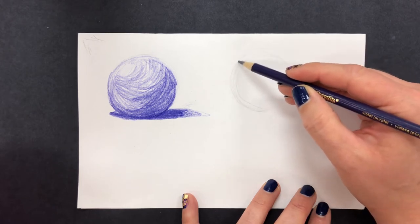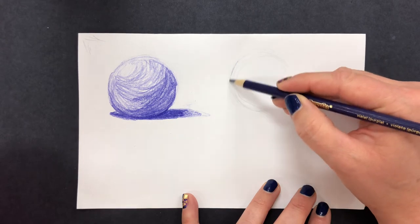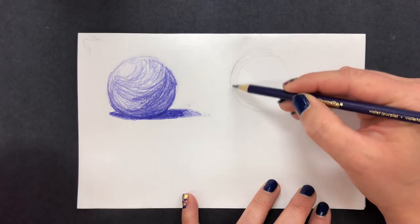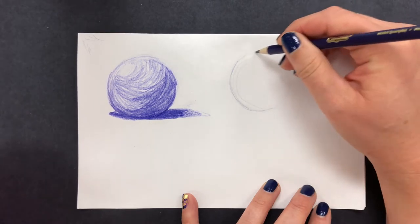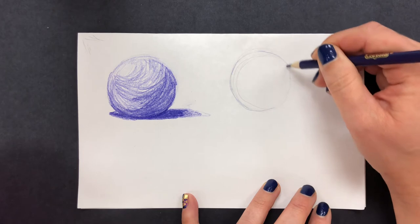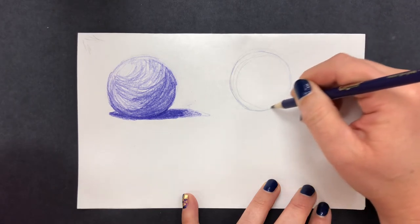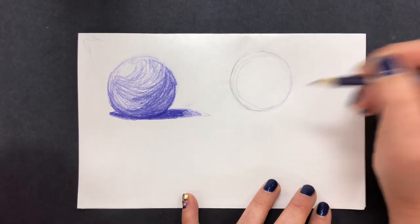I'm going to be mindful not to do any heavy outlining and I might even not do any outlining at the very top where the highlight is going to hit. So it's better to just do soft repetitive outlining so that you don't make it too dark.